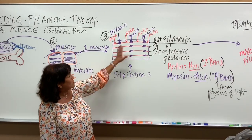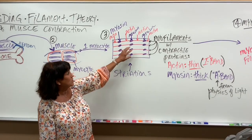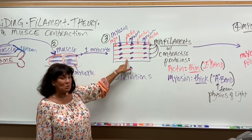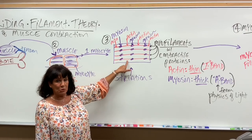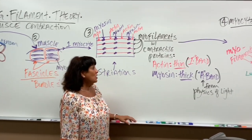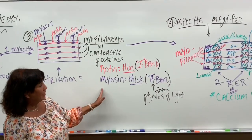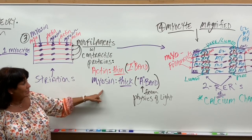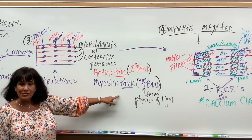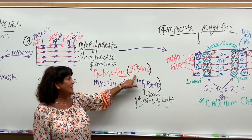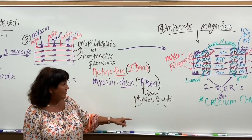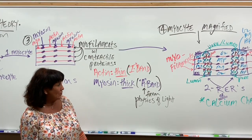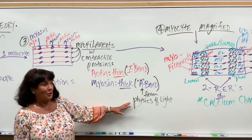Once we know that the myofilaments are in there, these are the proteins that are going to contract to make muscle cells move. The contractile proteins that make up the myofilaments are actin and myosin. They're called the thin and thick ones, and sometimes they're nicknamed the I-band and the A-band, and that has to do with the physics of light, the light penetration through the cells, which you do not have to know.